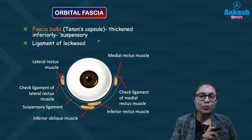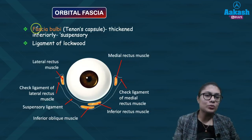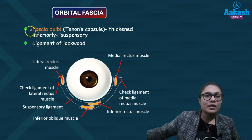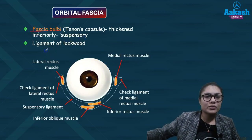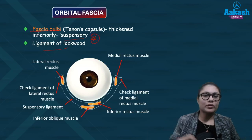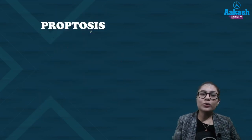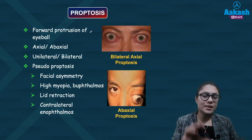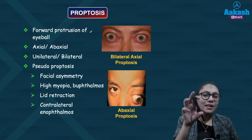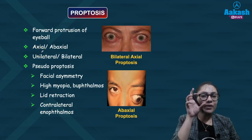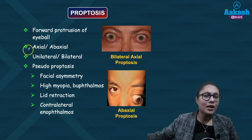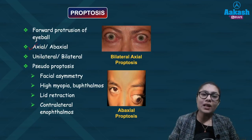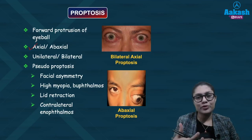The fascia covering the eyeball is the orbital fascia, also known as fascia bulbi or Tenon's capsule. It shows thickening inferiorly known as the suspensory ligament of Lockwood. Proptosis refers to forward protrusion of the eyeball. If it maintains the visual axis, it is termed axial; when it deviates from that axis, it is known as ab-axial. It can be unilateral or bilateral.